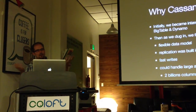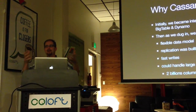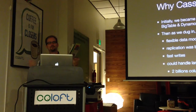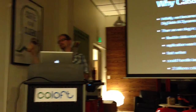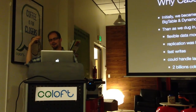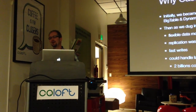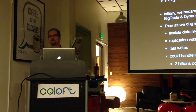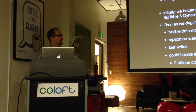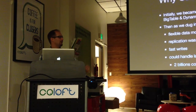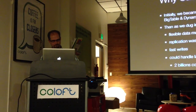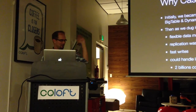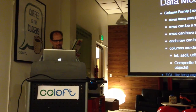With fast writes and fast reads maturing together, and the ability to keep adding machines, you end up with the notion that you can store an insane amount of data. The one major current limitation is that one row can only have two billion columns — but it can have billions and billions of rows. So let's talk about the data model.